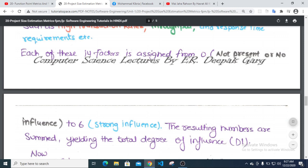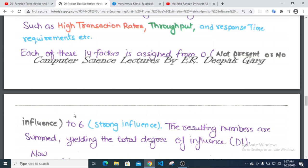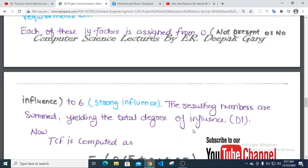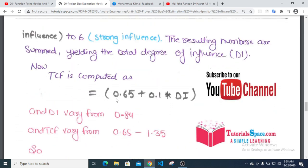Each of these 14 factors is assigned a value from 0 to 5. These numbers are summed, yielding the total degree of influence (DI). The formula is: TCF = 0.65 + 0.01 × DI.